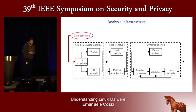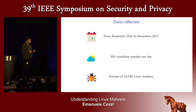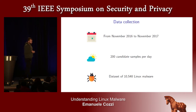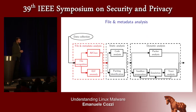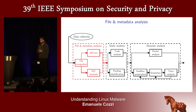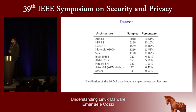We collected data for one year, receiving around 200 candidate samples each day. We filtered out binaries we were sure were built for Android or other systems such as BSD. Our final dataset consists of more than 10,000 samples. We inspected the ELF header to start answering questions — for example, about the diversity problem — to check whether these samples are really built to run on many different architectures. And in fact, the distribution is quite wide.